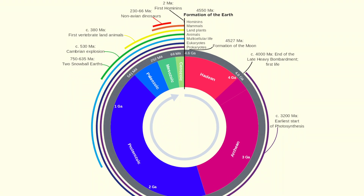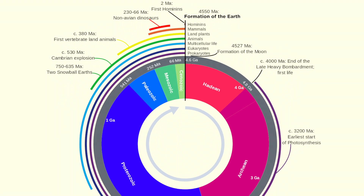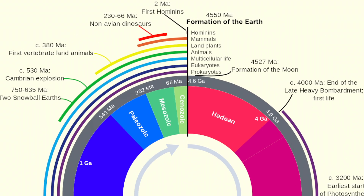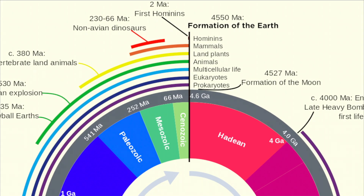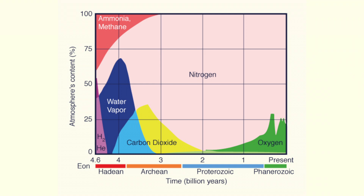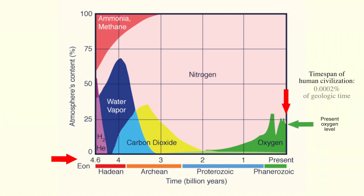Geologic time is nature's clock. Human time is but a small fraction of it. The Earth was formed about 4.6 billion years ago, yet the entire time span of human civilization is estimated at about 10,000 years, amounting to barely 0.0002% of geologic time.